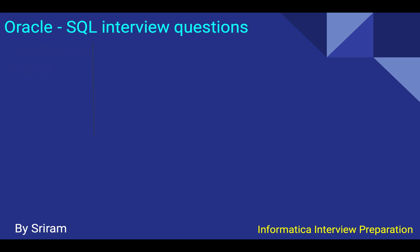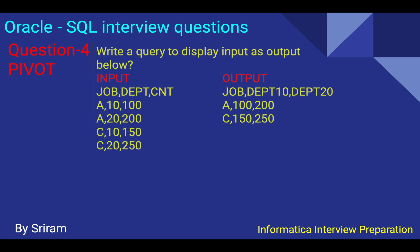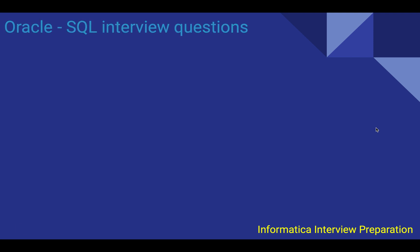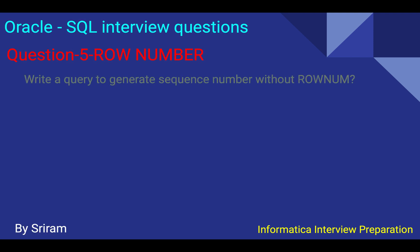The next question is about pivot. They want an input table to be transformed so that departments, which are rows in the input, become columns in the output. This is called pivot — changing rows to columns. In the pivoted output, the number of rows is reduced and rows are converted into columns. That's the essence of a pivot query.